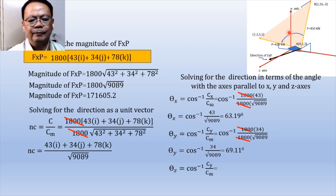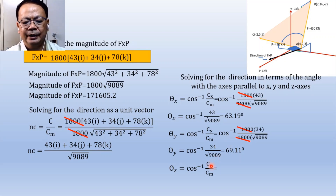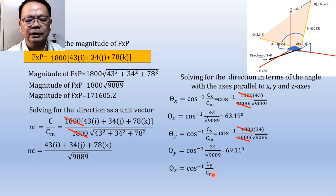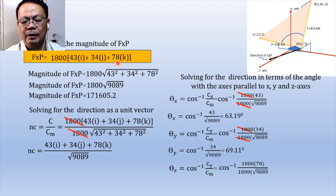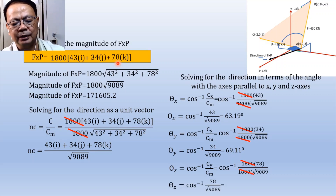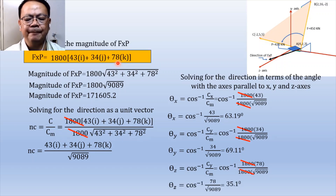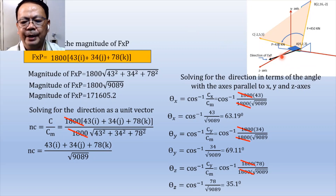Finally, theta sub z is the arc cos of the z component of the cross product divided by the magnitude. That gives us 1800 × 78 divided by 1800 × √9089; the 1800 cancels, giving theta sub z = arc cos(78 / √9089) = 35.1°. This is the angle that the direction of the cross product makes with an axis parallel to the z axis.